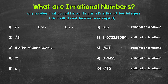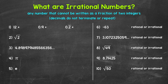Irrational numbers are numbers that cannot be written as a fraction of two integers. The decimal form of an irrational number does not terminate or repeat. This will make a lot more sense as we go through our examples.